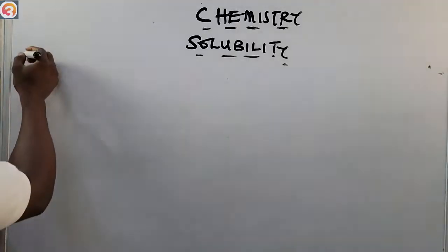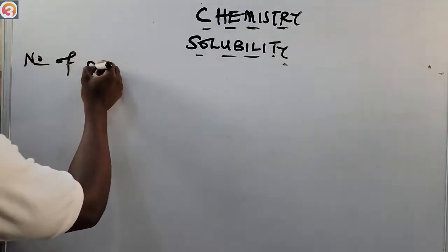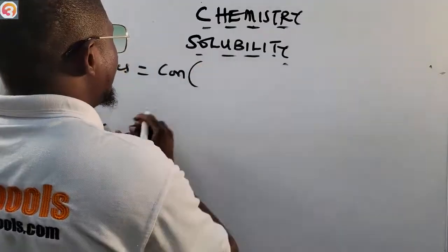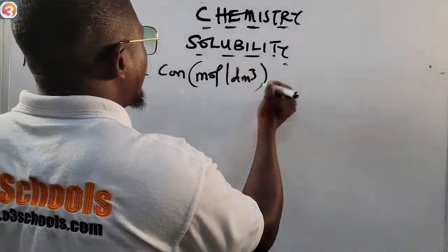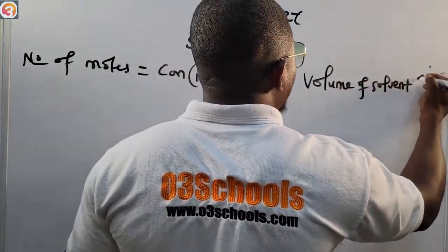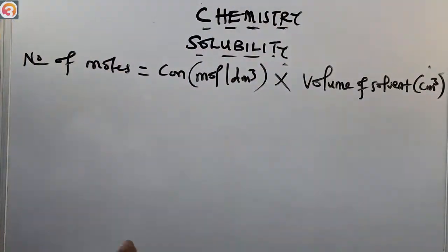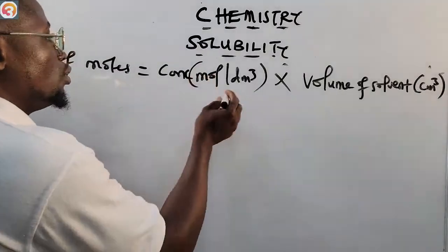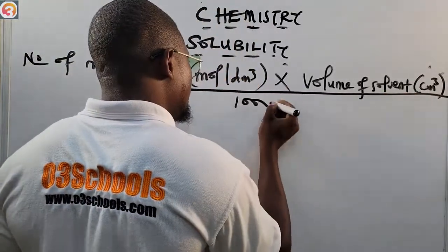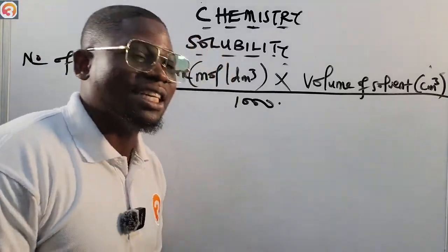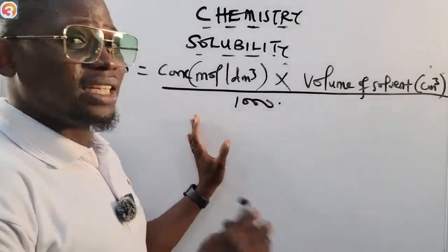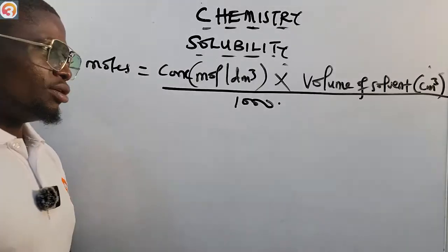First, we know that number of moles equals concentration in mole per dm³ times volume of solvent in cm³, all over 1,000. This is not the first time we have seen this formula. Remember: when volume is given in dm³, we do not divide by 1,000 — in that case, number of moles equals concentration times volume directly (CV).